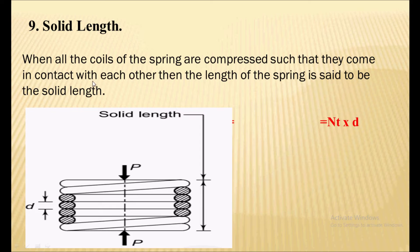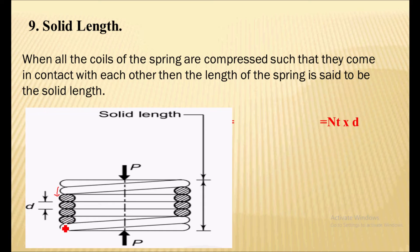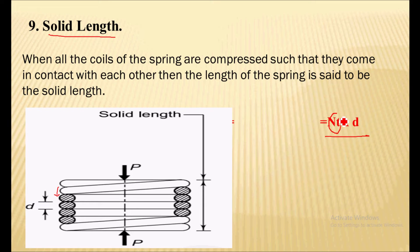Next is the solid length. When all the coils of the spring are compressed such that they come in contact with each other, the length of the spring is the solid length. In solid length there is no further compression possible. Solid length is given by the equation: N_t × d, where N_t is the total number of coils and d is the wire diameter.